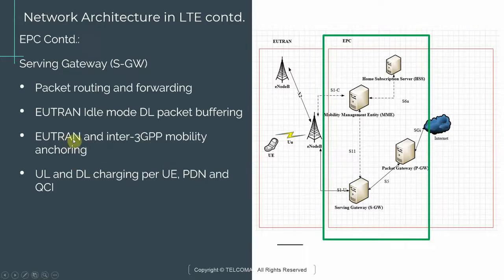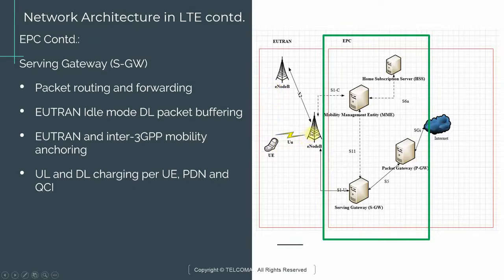The SGW also handles EUTRAN and inter-3GPP mobility anchoring. When a UE moves from one eNodeB to another — what we call a handover — the Serving Gateway buffers all incoming downstream data for that UE. At the instant the UE successfully hands over to the other eNodeB, that buffered data is delivered to the new eNodeB.